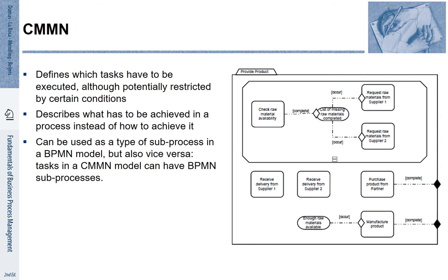On the right-hand side, you see some of the notations. You see that certain activities are connected, requiring that certain conditions hold. For providing a product, we need to check raw materials available. If that check is done, we get a list of missing raw materials. Depending on what is required, we may request raw materials from supplier 1 or 2.